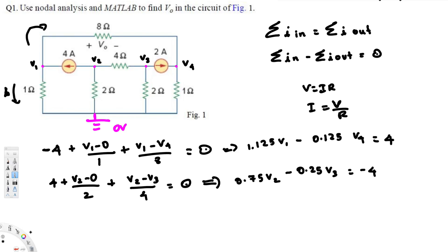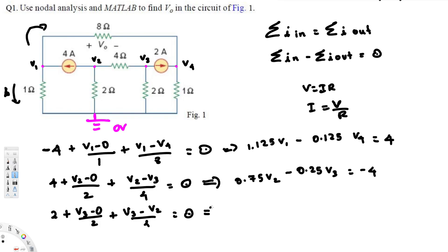For the third node, the 2-ampere current is leaving, so we write positive 2. Assuming the remaining currents are leaving, we get (V3 − 0)/2 plus (V3 − V2)/4 = 0. Simplifying gives the third equation: −0.25·V2 + 0.75·V3 = −2.